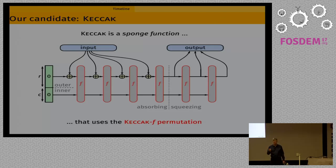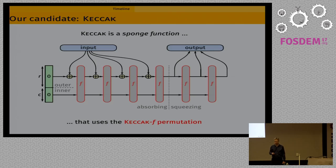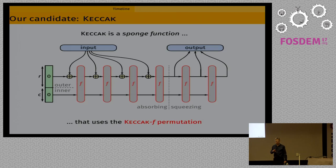Our candidate was Keccak. Keccak is a sponge function, which is a generalization of a hash function. There is a state initialized to zero, and the input is cut into blocks, which are processed one after the other. Between these blocks, there is a permutation F. This permutation F, called Keccak-F, is really the core of Keccak — it's where most of the cryptography happens and where most of the time is spent.